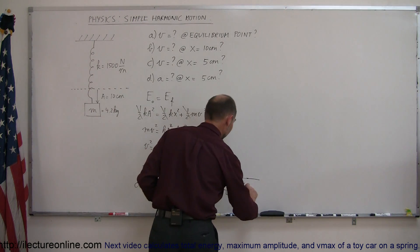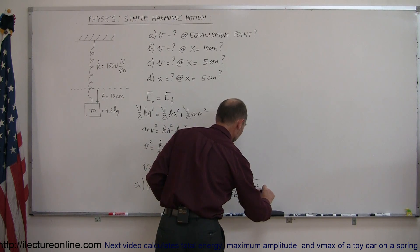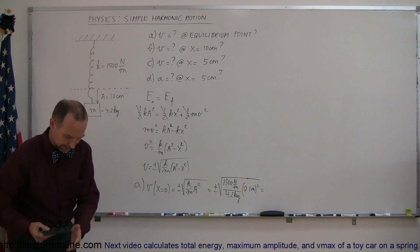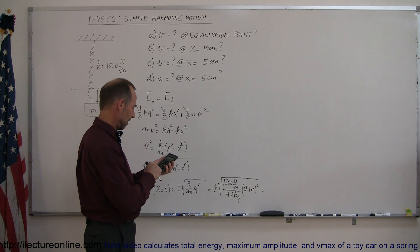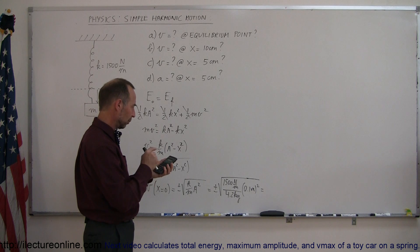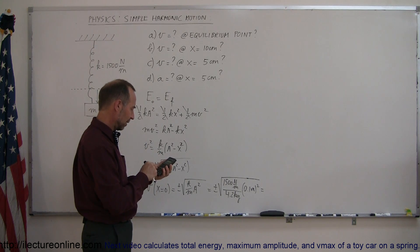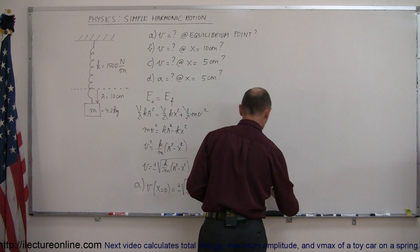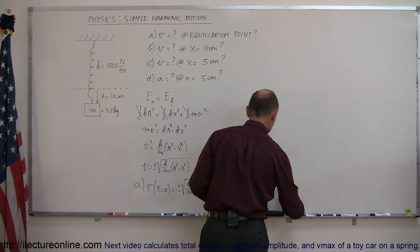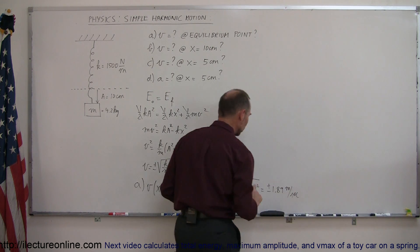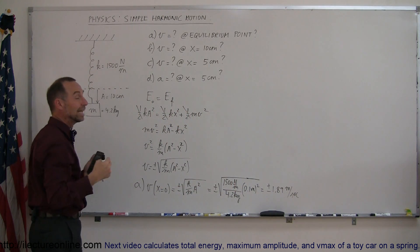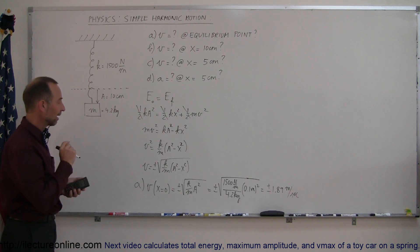So a² = 0.1² = 0.01. We compute 1500 × 0.01 ÷ 4.2, then take the square root, giving 1.89 m/s. The answer is plus or minus 1.89 m/s. It's plus or minus because the object could be moving upward or downward — either would be correct. That's the answer for part a.